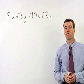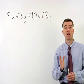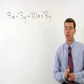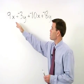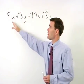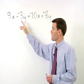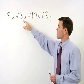To simplify, we can only combine what are called like terms. In this problem, we have a pair of like terms in our x terms and a pair of like terms in our y terms.